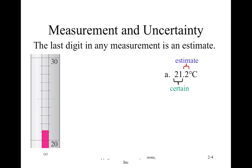So what happens is that last little bit that is above the tick mark, we consider that uncertain, and we estimate it. So this person that made this measurement, they estimated it to be 0.2.